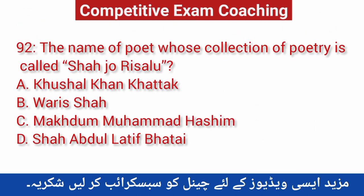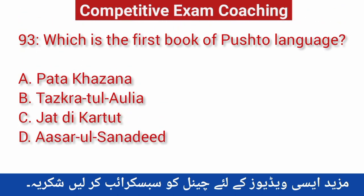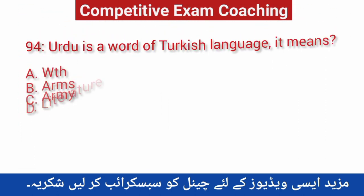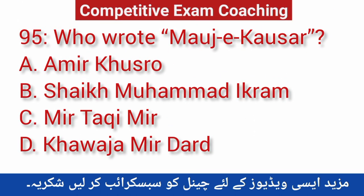Question number ninety-two: The name of the poet whose collection of poetry is called 'Shah Jo Risalo'? Correct answer is D — Shah Abdul Latif Bhittai. Question number ninety-three: Which is the first book of Pashto language? Correct answer is A — Pata Khazana. Question number ninety-four: Urdu is the word of Turkish language — what does it mean? Correct answer is C — Army. Question number ninety-five: Who wrote 'Mouj-e-Kausar'? Correct answer is B — Sheikh Muhammad Ikram.